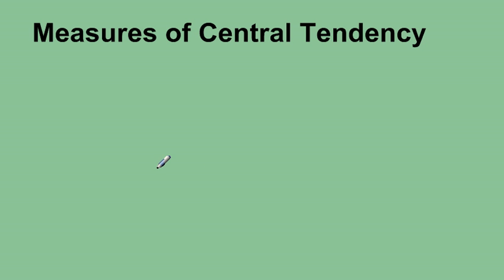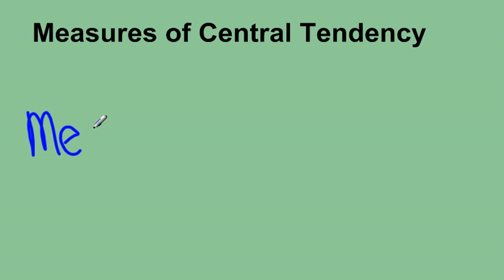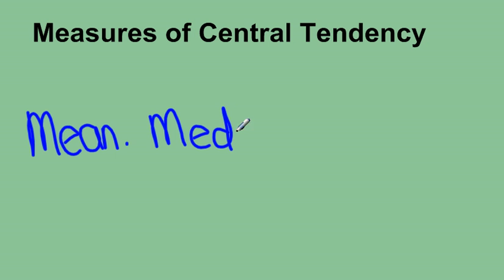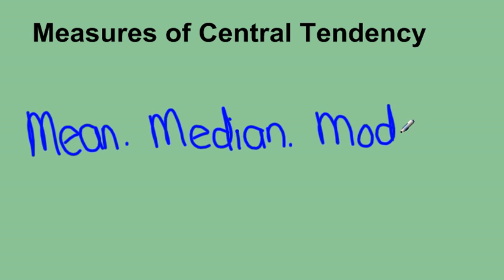Finding the measures of central tendency is a way of looking at data and interpreting it to find a trend or a middle value. There are three measures of central tendency we'll look at today, and those are mean, median, and mode. You may have heard of one or all of these before.